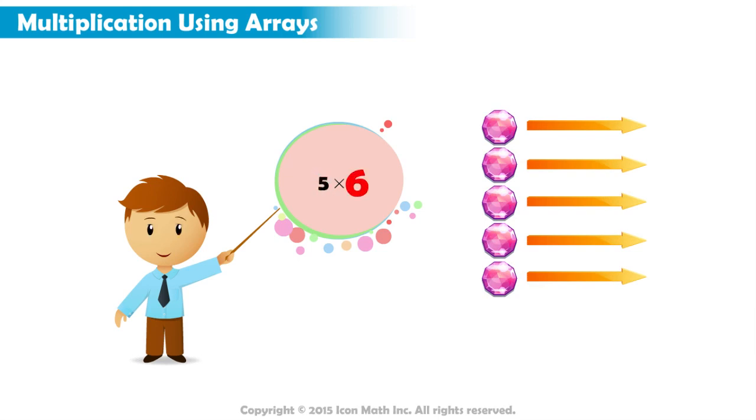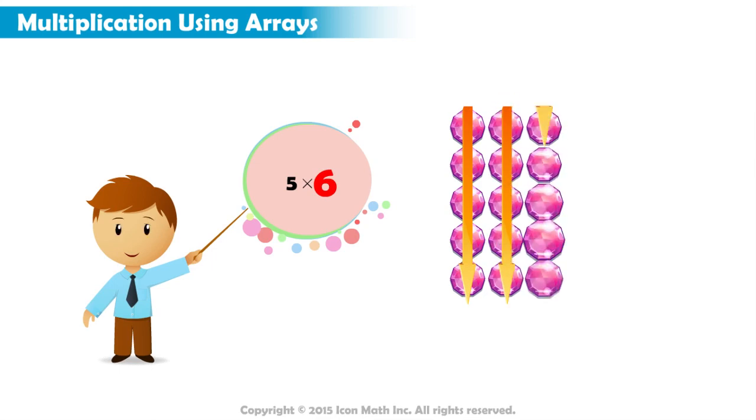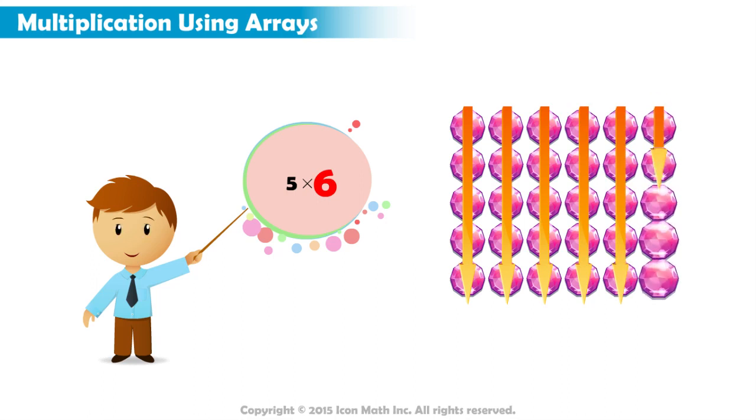The second number represents the number of columns, so we draw six columns. This is the first column, second, third, fourth, fifth, and sixth.